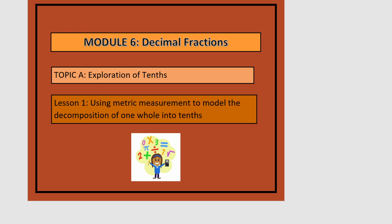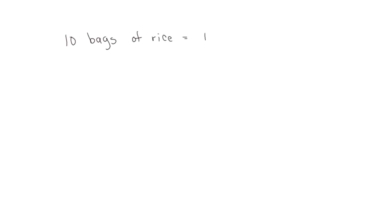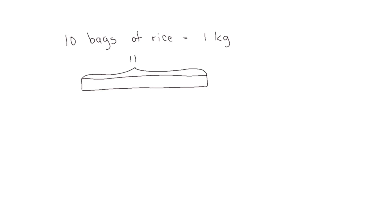This is Module 6, Lesson 1. In this lesson we'll be using metric measurement to model the decomposition of one whole into tenths. Let's start looking at this problem where we have 10 bags of rice and added together they equal the weight of one kilogram. Let's draw a tape diagram showing the total weight of one kilogram and divide it up into tenths, so that one bag would be 1 tenth of a kilogram.